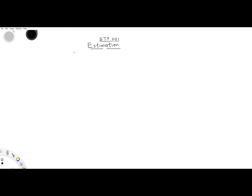Welcome back. We are treating confidence interval, which is used for estimation of population mean. When you are estimating a population mean from a sample — which is essentially finding the confidence interval — the formula you use is: sample mean plus or minus the z-score (alpha level) multiplied by the population standard deviation, all over the square root of sample size.